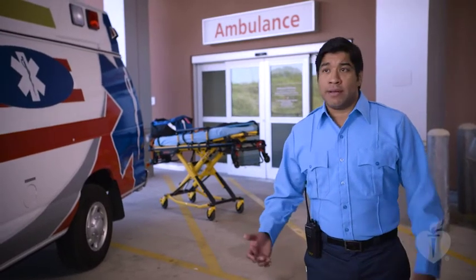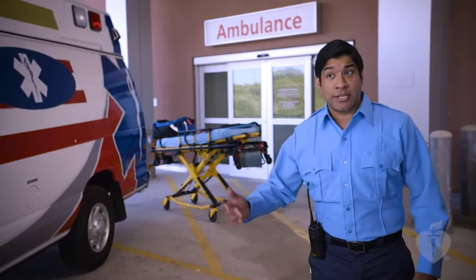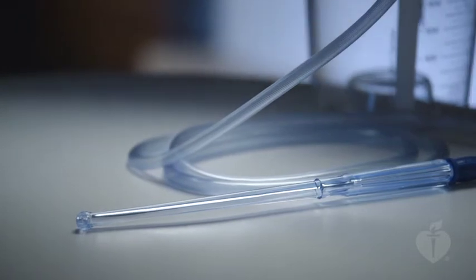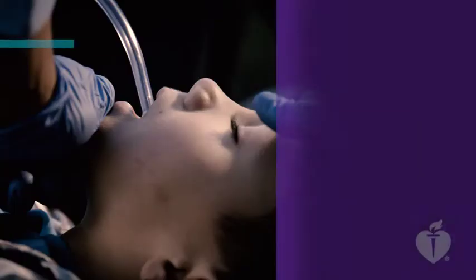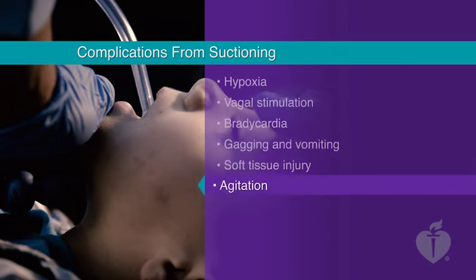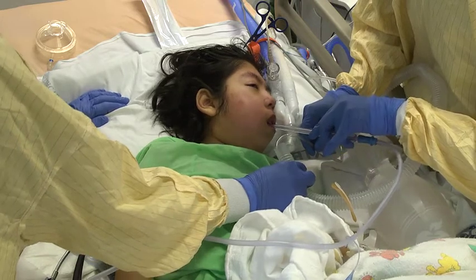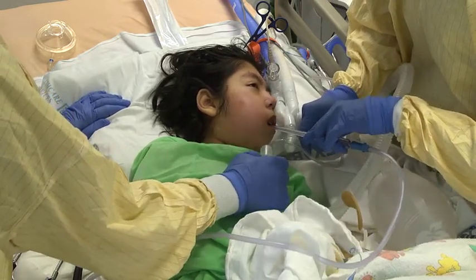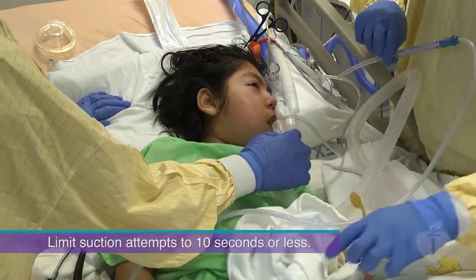When supporting the airway and breathing of a child, you may find you need to clear the airway. That may include suctioning of secretions, blood, or vomitus. Suction devices can be either portable or wall-mounted. Those used in children should have adjustable suction regulators so that you can minimize tissue trauma. Semi-rigid pharyngeal tips and various sizes of catheters should be available. Complications from suctioning may include hypoxia, vagal stimulation, bradycardia, gagging and vomiting, soft tissue injury, and agitation that may further compromise the patient's cardiorespiratory status. To suction the oral pharynx, gently insert the distal end of the suction catheter into the oral pharynx over the tongue, guide it into the posterior pharynx, and apply suction by covering the catheter's side opening. Withdraw the catheter with a rotating or twisting motion. Try to limit suction attempts to 10 seconds or less to help reduce the risk of hypoxemia.